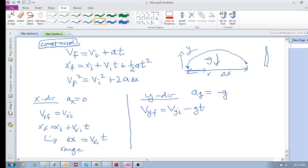Then, what about this guy? Well, the x's have to change into y's because we're looking now in the y direction. So y final equals y initial plus vy initial times time minus half gt squared.